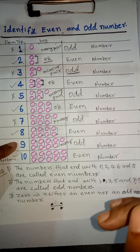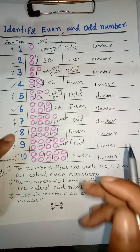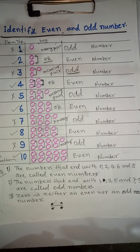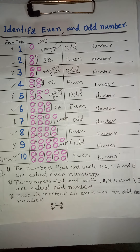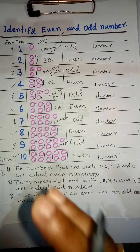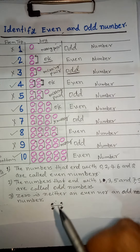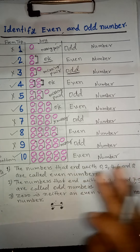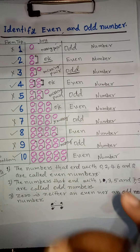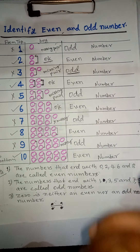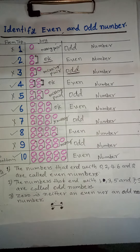One more thing you should always remember: 0 is neither an even number nor an odd number by itself. But when any number ends with 0, that number will be an even number. So 0 on its own is neither even nor odd, but a number whose last digit is 0 will always be an even number.